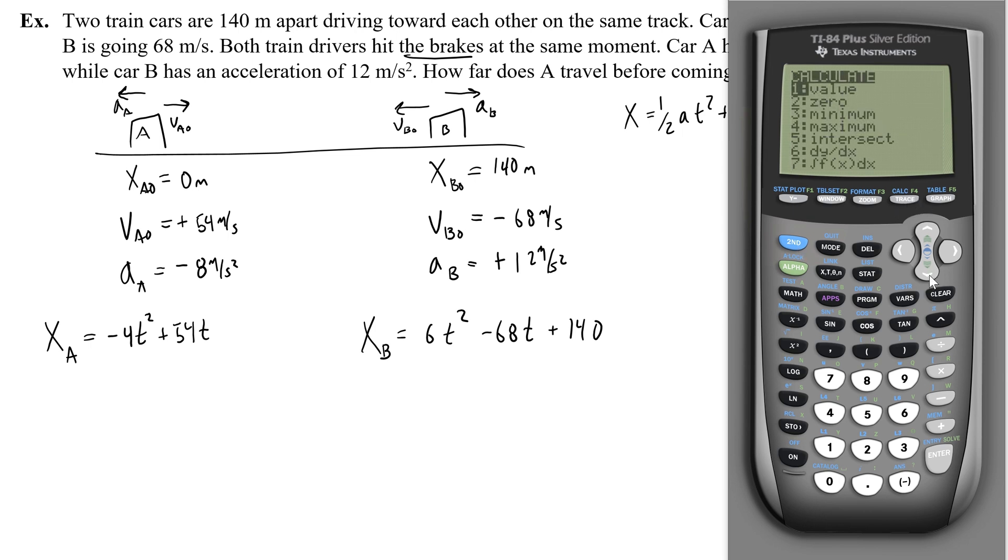And you click second calc 5, which is intersect. Then you go to the left of the intersection, press enter, that's the first curve. And to the right, press enter, that's the second curve. I never guess, I just press enter. And this tells me that the intersection is x equals 1.28, y equals 62.66. So the x is actually our time axis, so that would be 1.28 seconds is when they hit. And the position, the position is relative to A because we said A started at zero. So A went 62.66. If I needed to figure out how far B had gone, I would just take 140 and subtract that 62.66. So let's write this down.